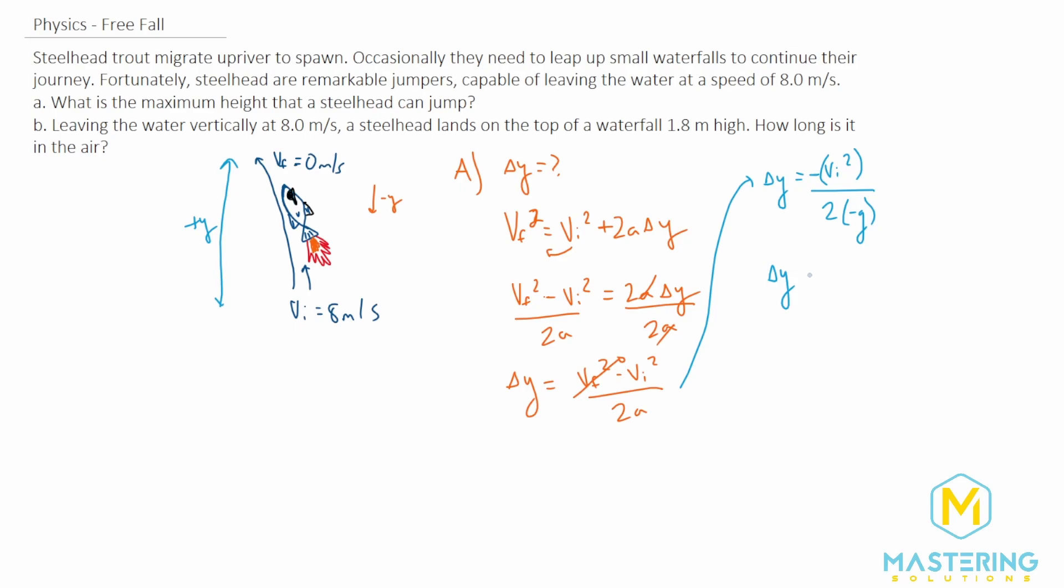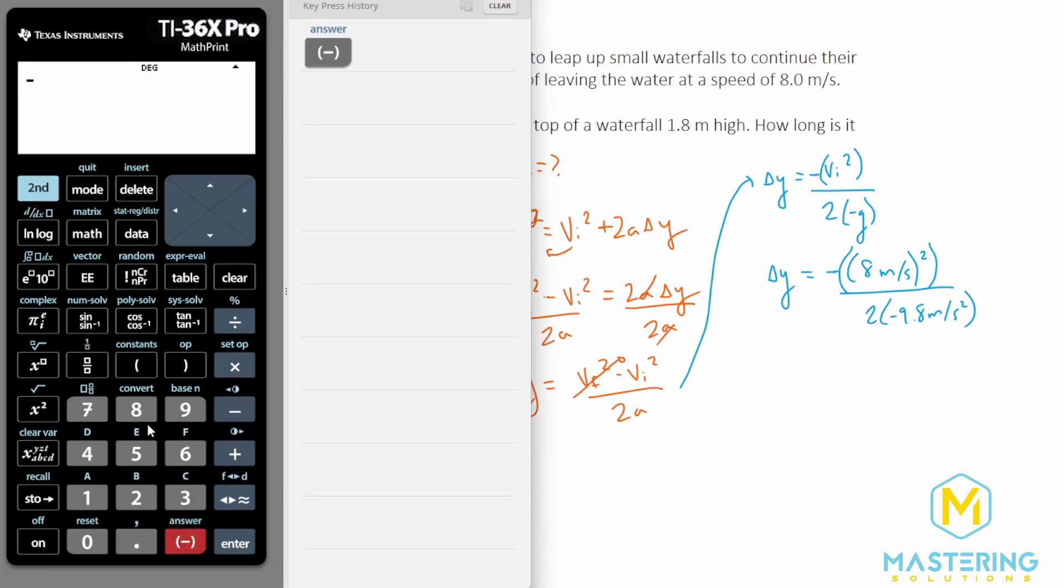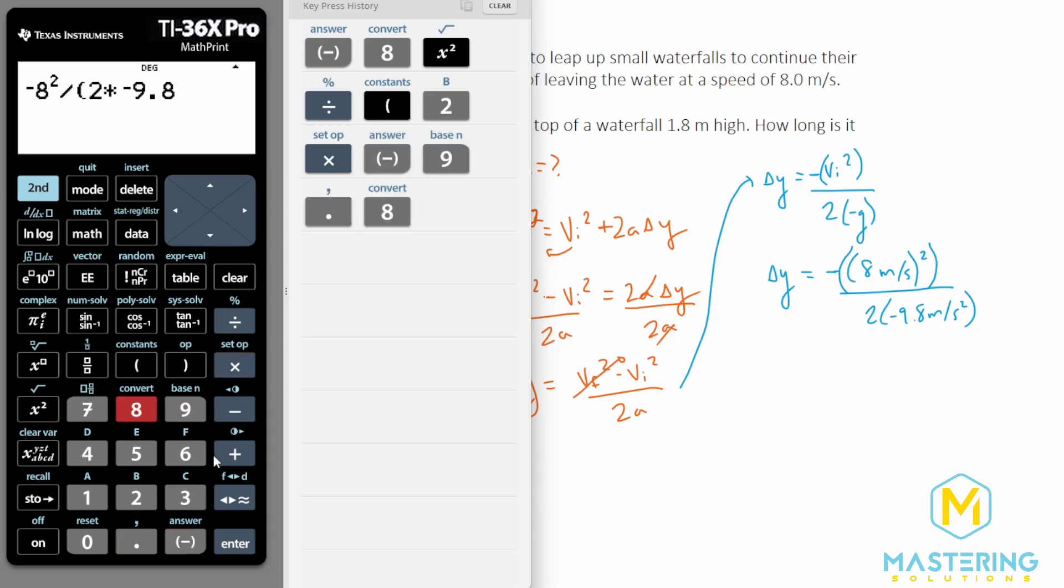Now we are just left to plug in our values for part A. For the initial velocity we have 8 meters per second squared, and we'll divide that by 2 times negative 9.8 meters per second squared. It's like we talked about: it needs to be squared, but the negative stays outside of the parentheses. So we have negative 8 squared divided by 2 times negative 9.8 for gravity.